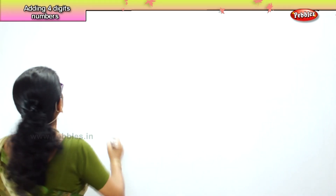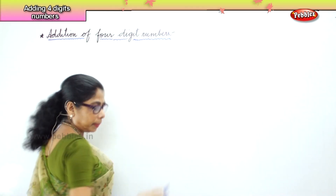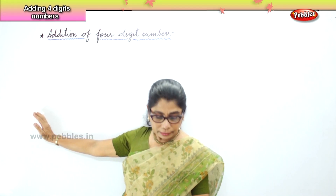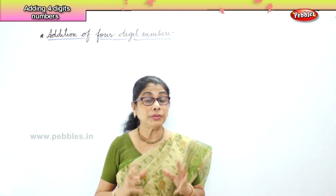Hi children, now let us learn to do addition of four digit numbers — straight addition. In addition of four digit numbers, we are going to have ones, tens, hundreds, and then one more place: thousands. You first have to write the ones, tens, hundreds, thousands after you get your numbers. Only then will you be able to do the addition of four digit numbers correctly.